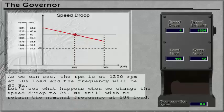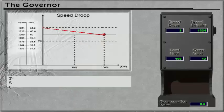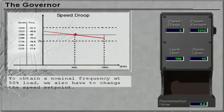We still wish to retain the nominal frequency at 50% load. To obtain a nominal frequency at 50% load, we also have to change the speed set point.